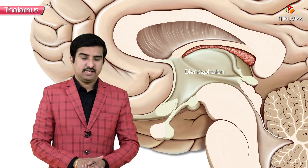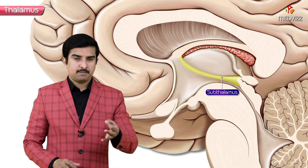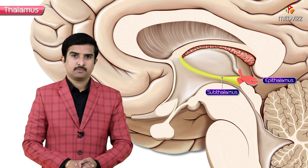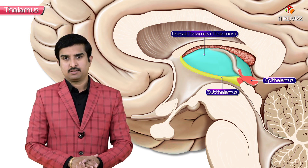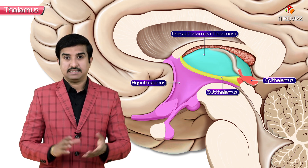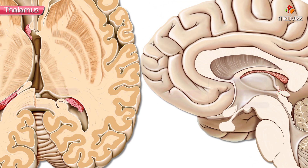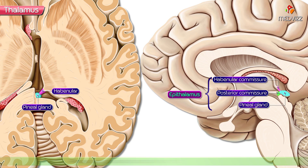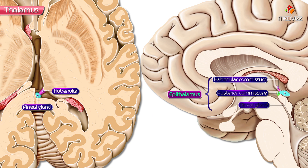The diencephalon is divided into four parts: the subthalamus, epithalamus, dorsal thalamus (also called thalamus), and hypothalamus. All these structures are derived from the diencephalon. The epithalamus includes the pineal gland, which in humans has an important role in circadian rhythm as well as in reproductive cycles.